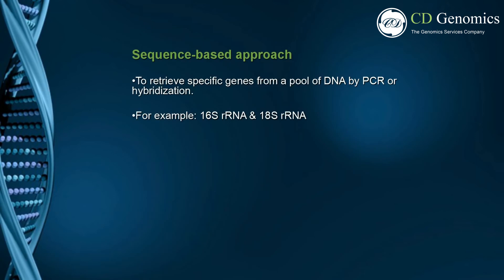The sequence-based approach has been used extensively to retrieve specific genes from a pool of DNA. Instead of cloning all the extracted DNA, primers are designed specifically against an identified target gene. The advantage of using sequence-driven screening is that it uses well-established and high-throughput techniques, such as PCR and hybridization, and can be used for different targets. For example, the 16S ribosomal RNA gene is a taxonomic genomic marker that is common to almost all bacteria and archaea. The portrait of the microbial world was revolutionized by analysis of 16S ribosomal RNA genes.